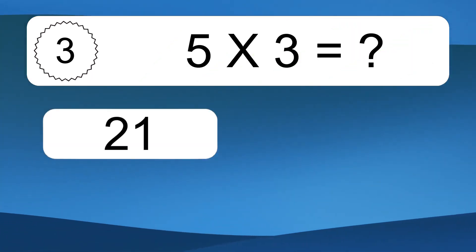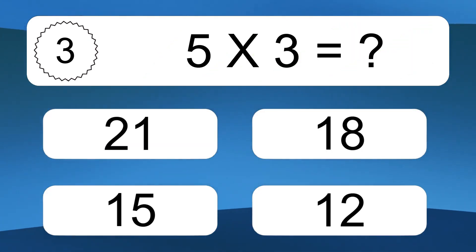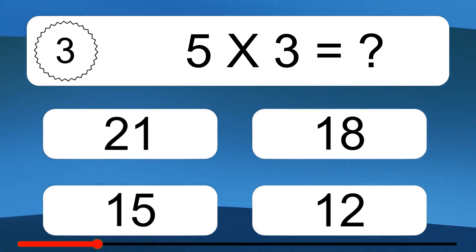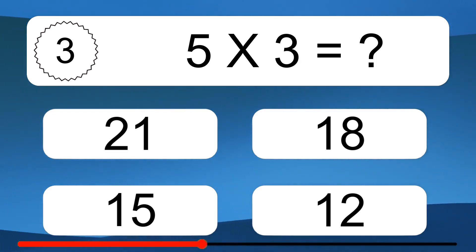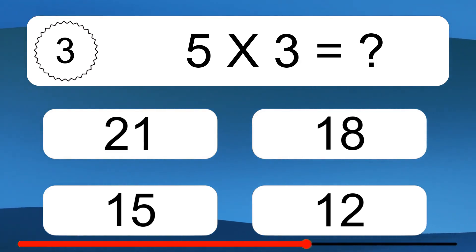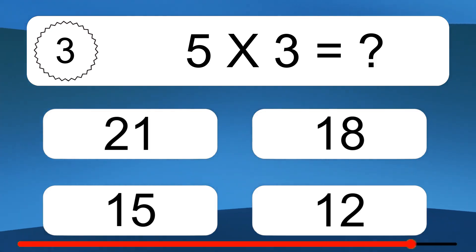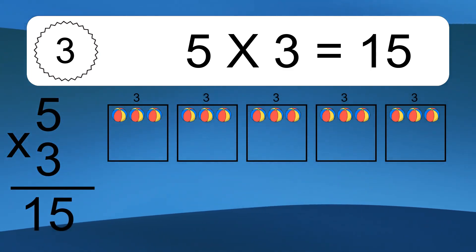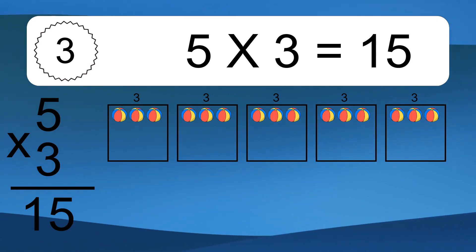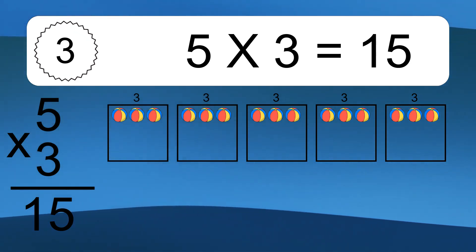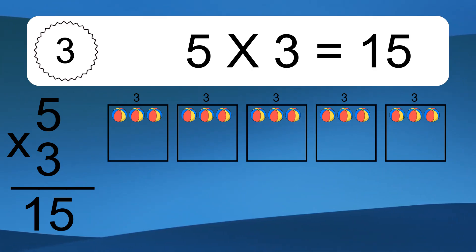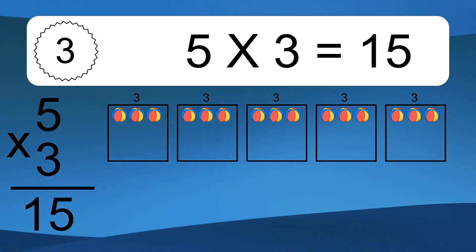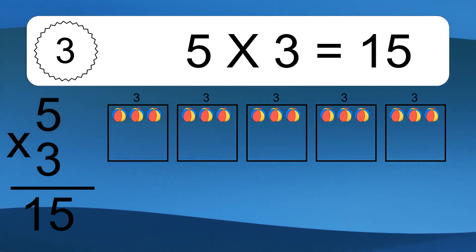Five times three equals what? Five times three equals 15. We have five boxes, and each box has three colorful balls inside. If you count all the balls in all the boxes together, you will have five times three balls. This equals 15 balls.